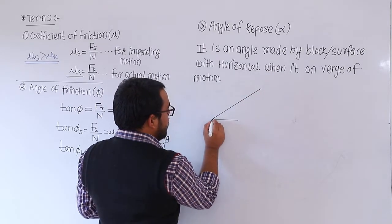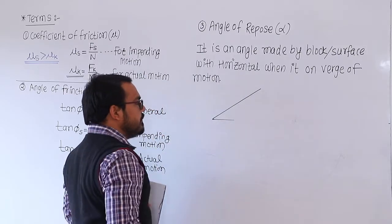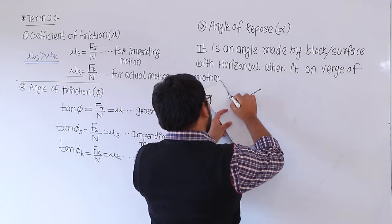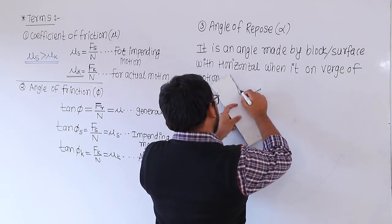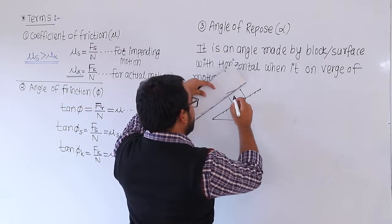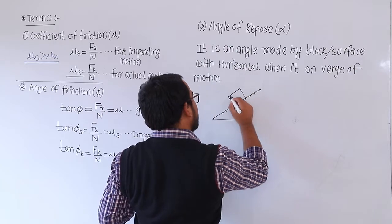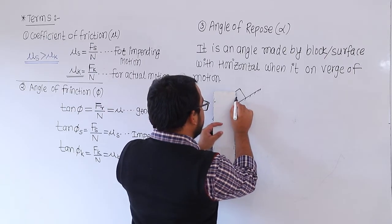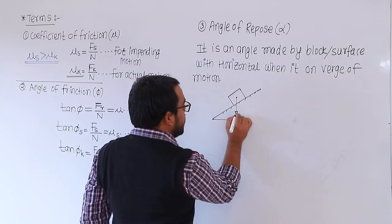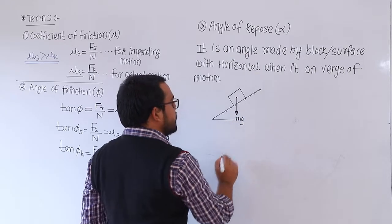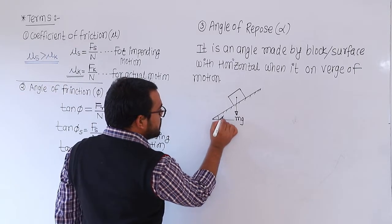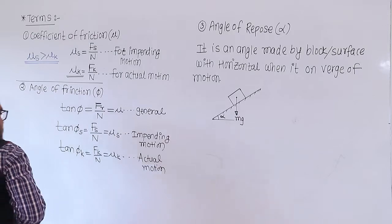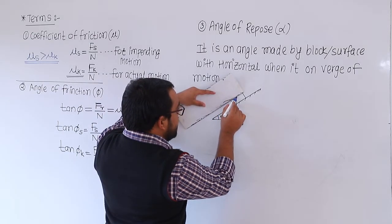This is the inclined rough surface, and on this surface there is one block. This block has its weight, which is always downward. The weight is mg, and the inclination is alpha. This mg has two components.